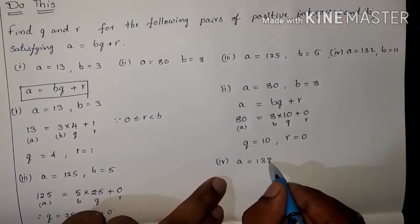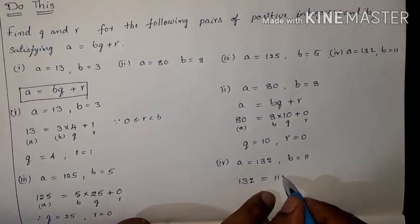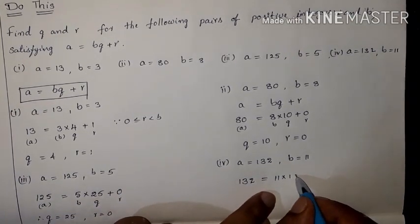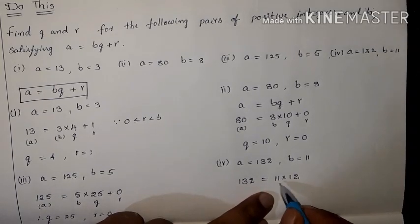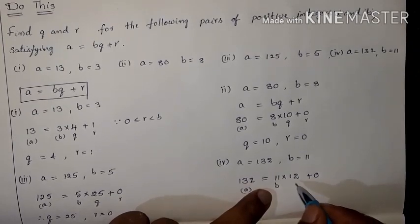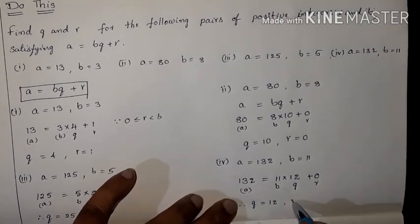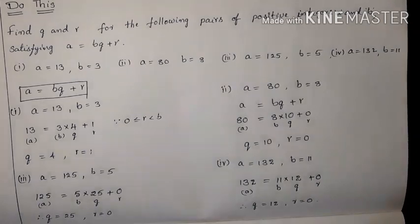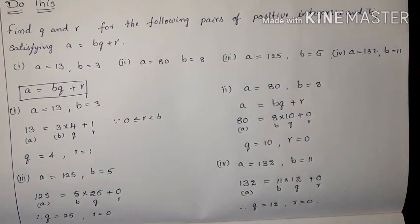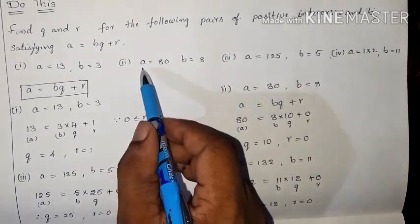Fourth one: A is equal to 132 and B is equal to 11. Condition A equals BQ plus R. So 11 into 12 is equal to 132, plus 0. Therefore Q is equal to 12 and R is equal to 0.